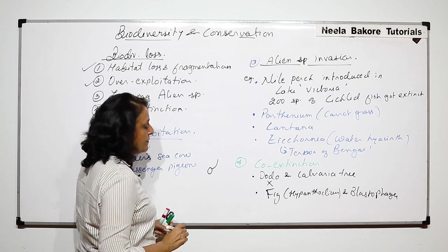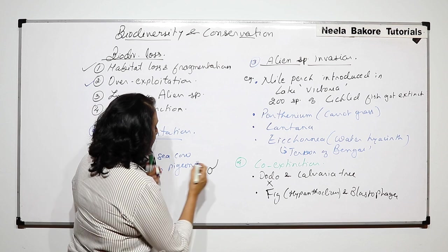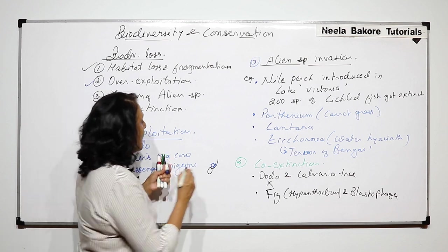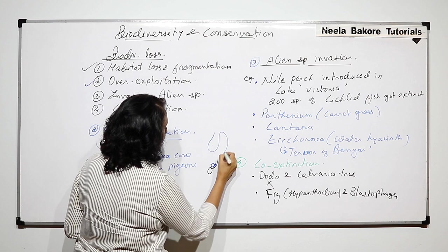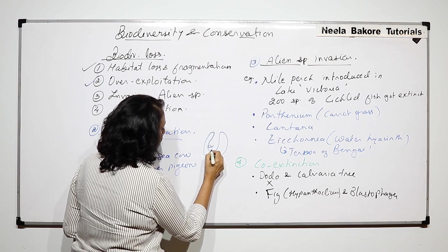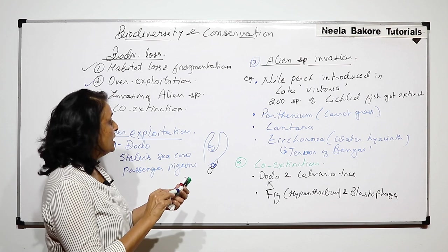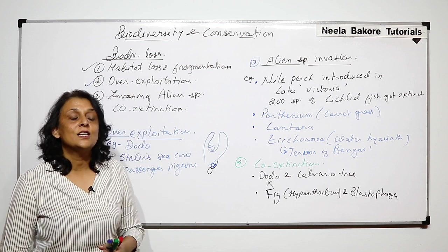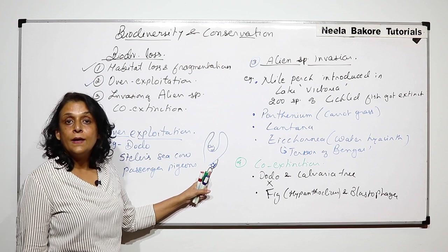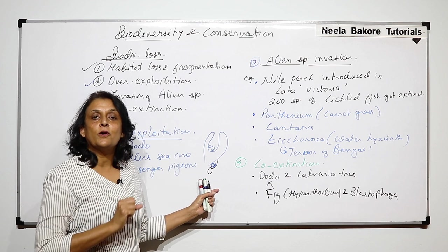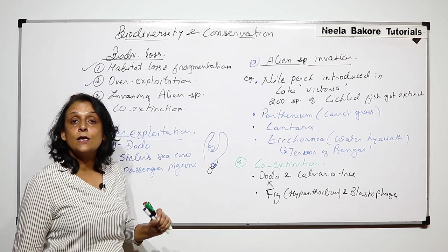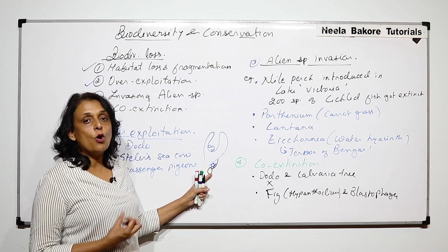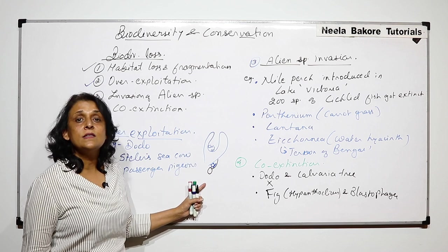Blastophaga would lay its eggs in the sterile female flowers, which are also known as gall flowers. Blastophaga is commonly known as the gall wasp. It is a secured environment for the eggs, and as soon as they hatch, they would feed on this particular flower. There is no loss to hypanthodium because this flower is sterile anyways.